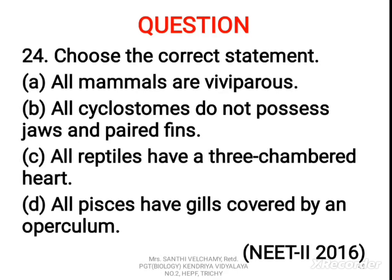24th question: choose the correct statement. A) All mammals are viviparous. B) All cyclostomes do not possess jaws and paired fins. C) All reptiles have a three-chambered heart. D) All fishes have gills covered by an operculum. The correct answer is B — all cyclostomes do not possess jaws and paired fins. Ornithorhynchus and Tachyglossus are oviparous mammals. Crocodile is a reptile possessing a four-chambered heart. In cartilaginous fishes except Chimaera, gills are not covered by an operculum.